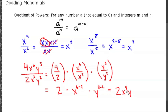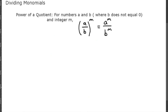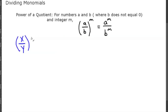Let's look at the power of a quotient. For any numbers a and b where b does not equal zero and integer m, the quantity a over b raised to the m is equal to a to the m over b to the m.